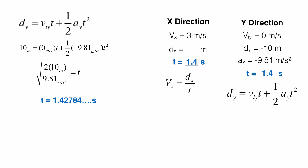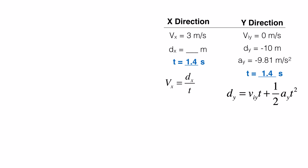Now remember, since it's the same ball, the time it takes for it to land in the y direction is the same time that it takes for the ball to land in the x direction. Now that we know that the time is 1.4 et cetera seconds, we have everything we need to find the displacement in the x position.